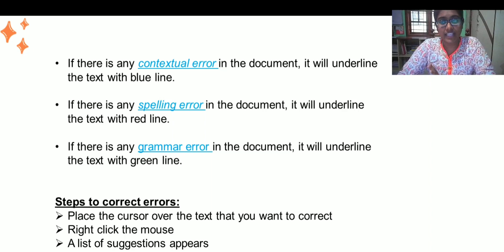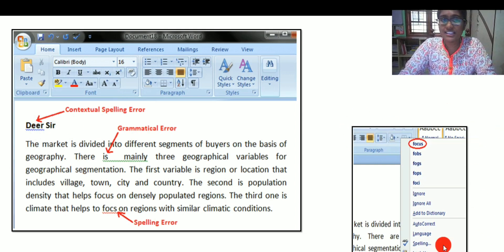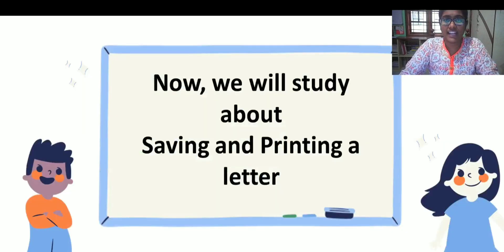What are the steps to correct these errors? Just place the cursor near the error and click, right click on the mouse. A list of suggestions appears. If this is your error, place the cursor, click it on the mouse. Here are the suggestions. So click on the perfect or the correct spelling and the error is rectified.